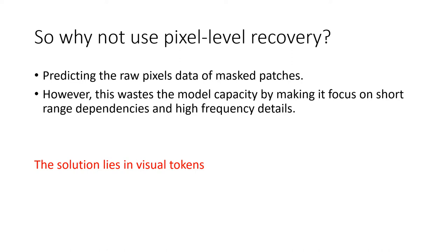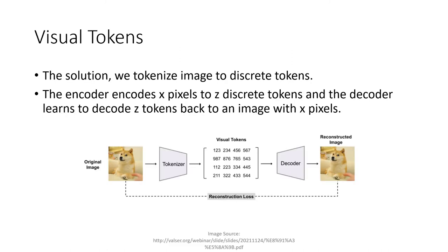The solution lies in visual tokens. We tokenize the image to discrete tokens using a discrete variational autoencoder. We take our original image and transform it into a matrix of N dimensions of discrete visual tokens. Then we have a decoder which decodes the image back.